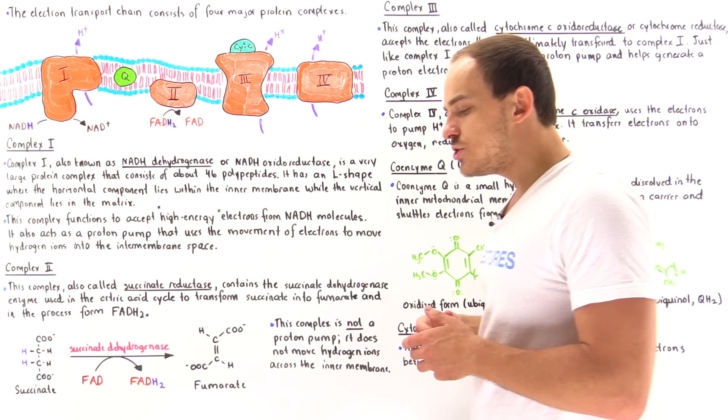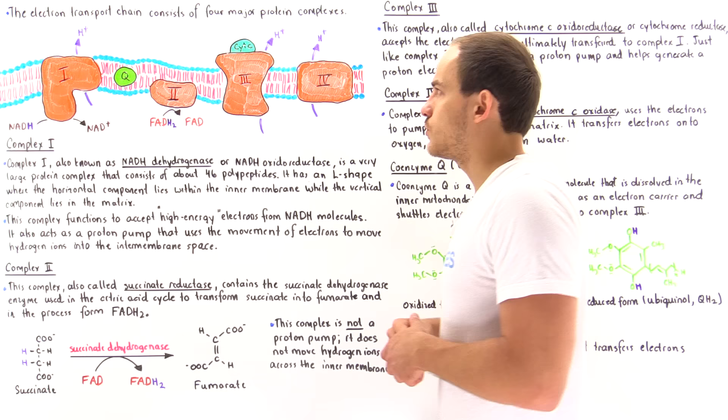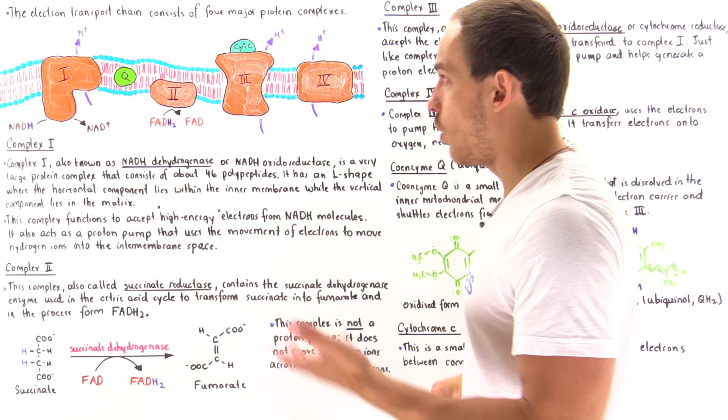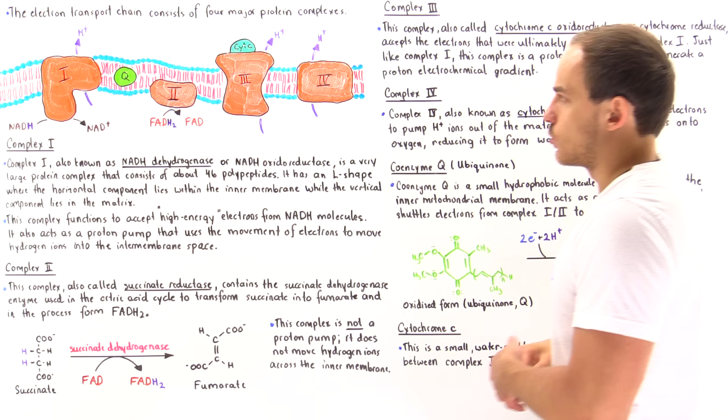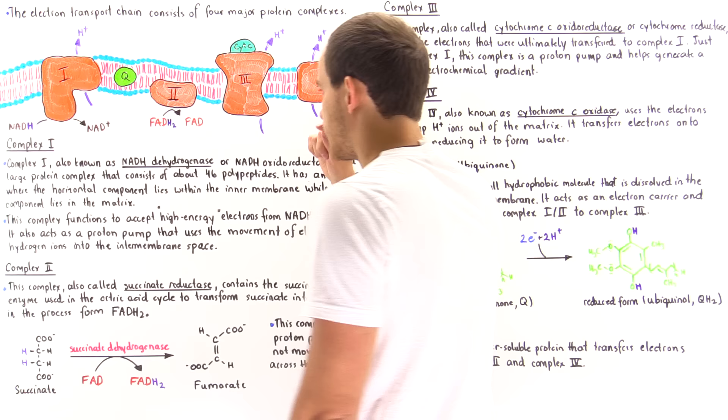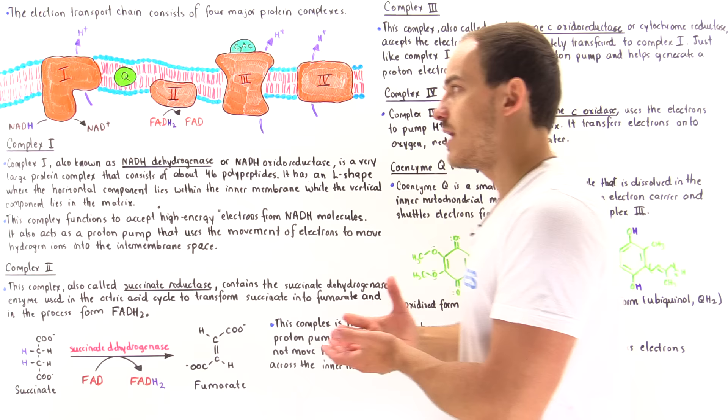In addition, we also have two very important electron carrier molecules used by the electron transport chain. One of them is known as Q, which stands for coenzyme Q, also known as ubiquinone, and the other one is known as cytochrome C. In this lecture, I'd like to briefly discuss these different types of structures, and in the next many lectures we're going to look at the details of what actually happens within each one of these complexes.